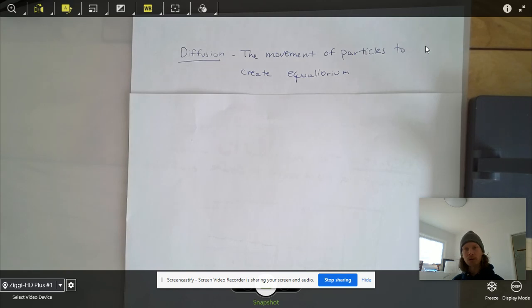So it's the movement of particles. Diffusion is very general. They can be anything, salt, sugar, any molecule or particle, like cologne diffuses throughout the air. So anything like that, pee in a pool, diffuse throughout.